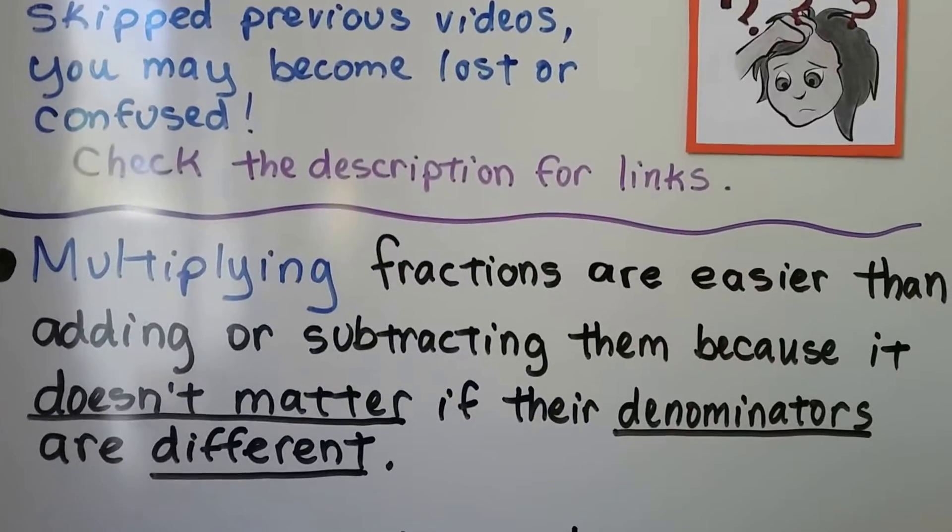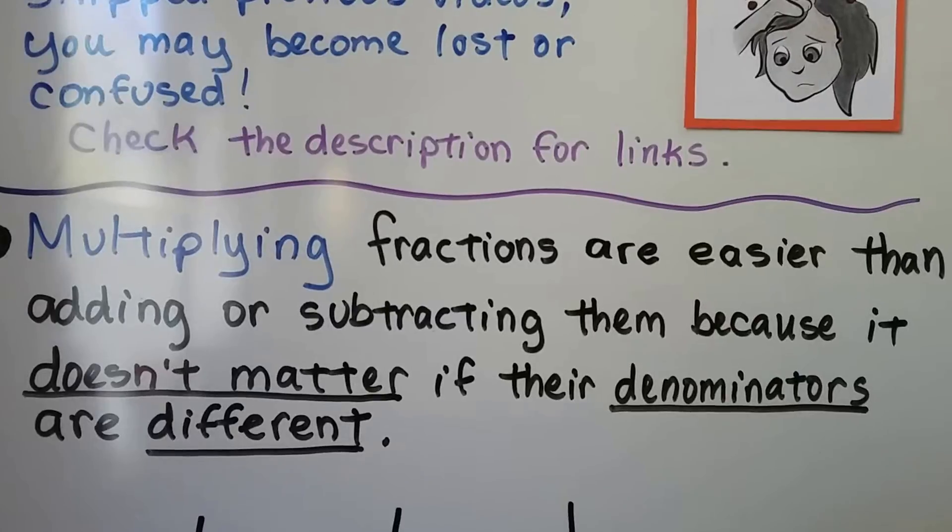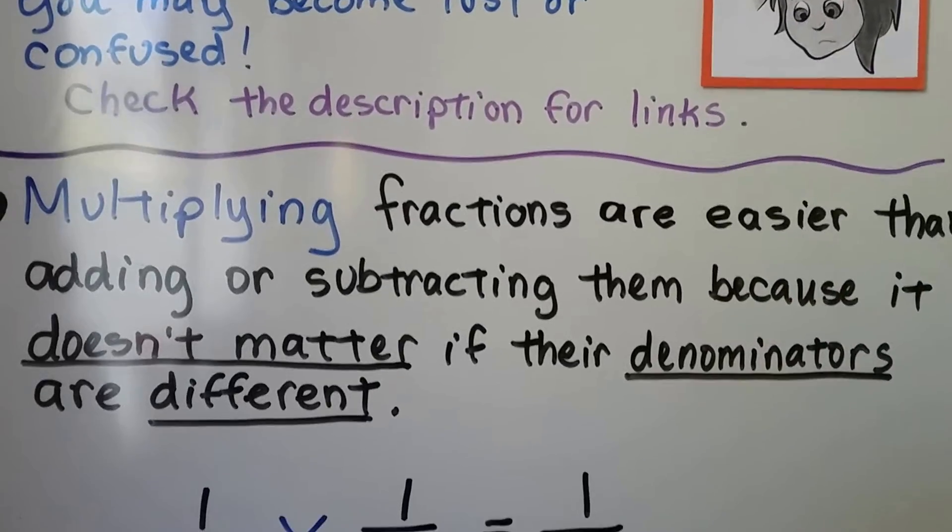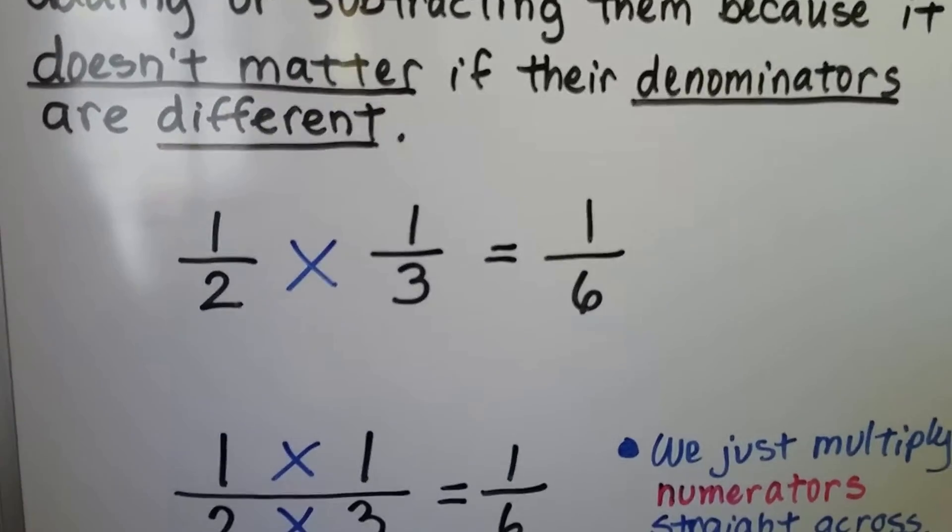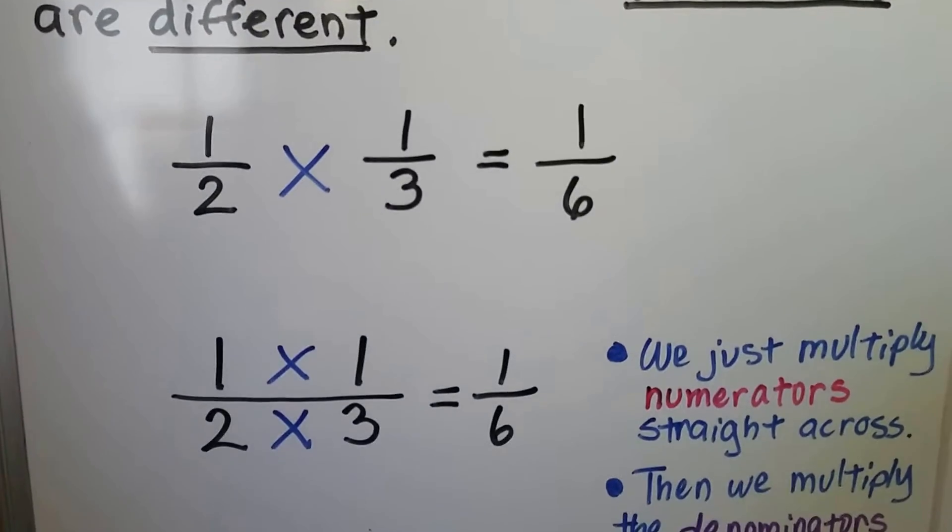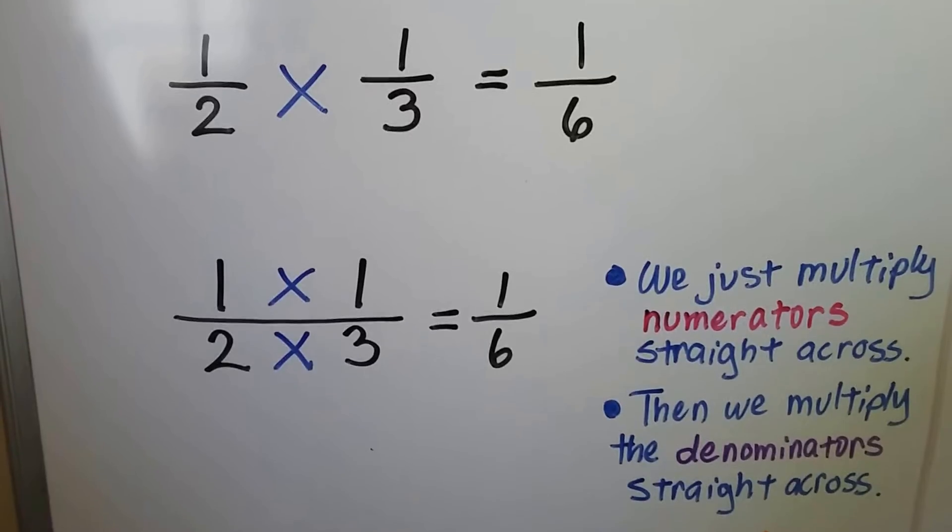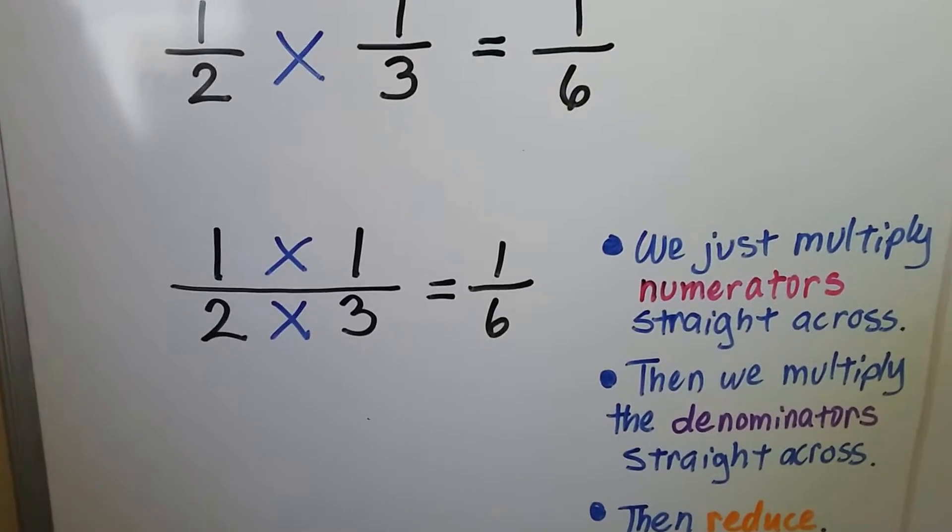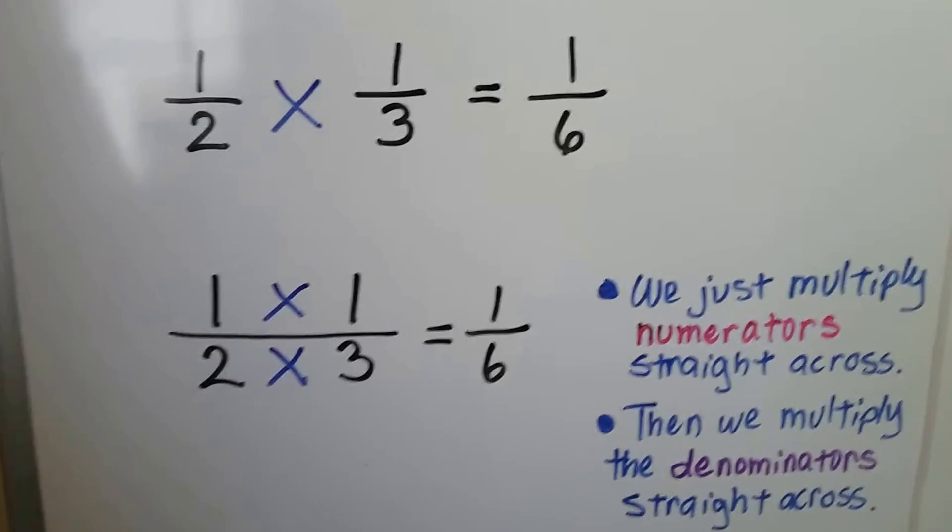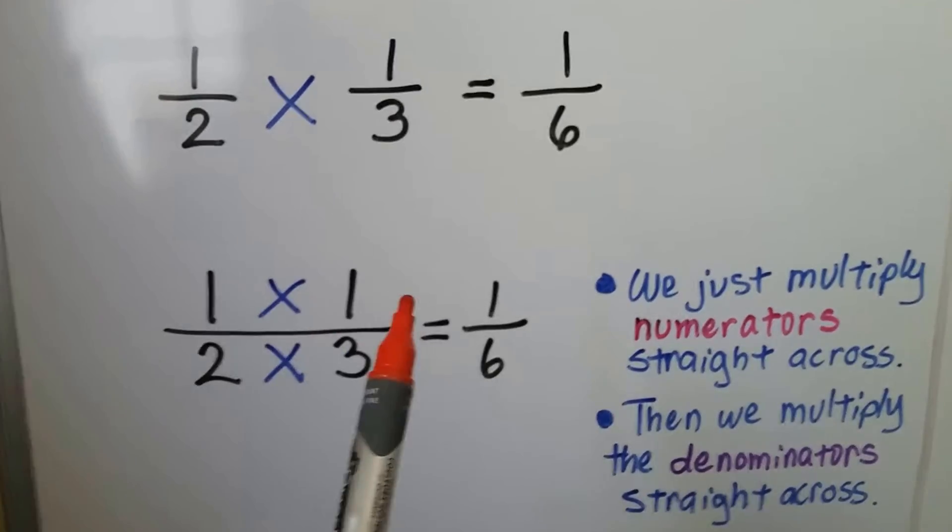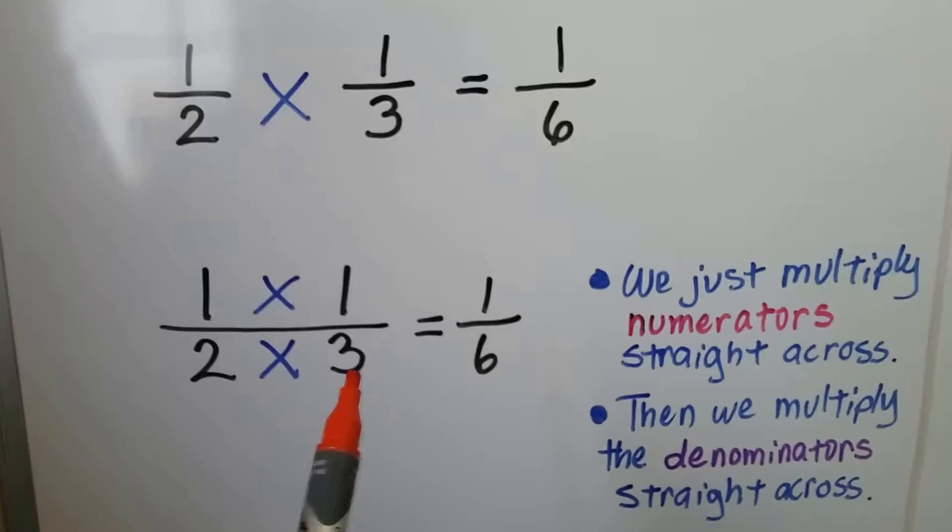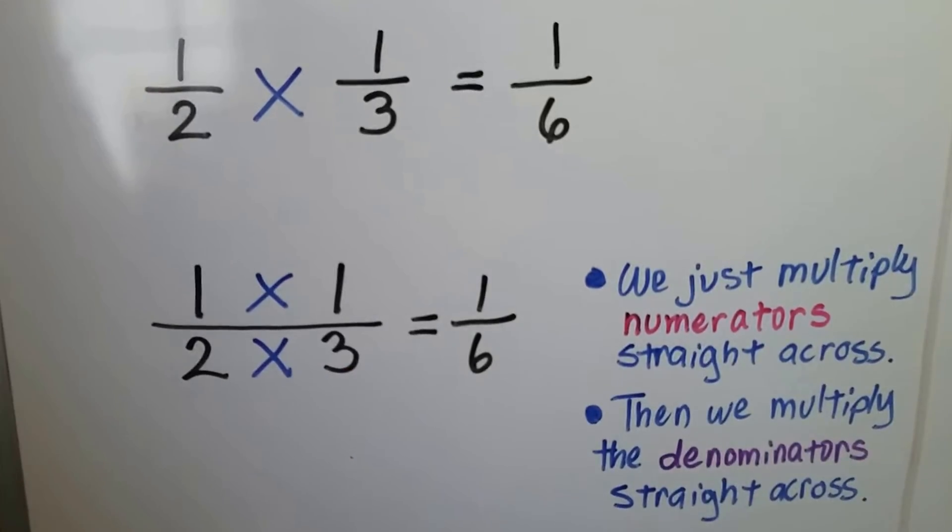Multiplying fractions are easier than adding or subtracting them because it doesn't matter if their denominators are different. We don't care. When we multiply fractions, we just multiply the numerators straight across, we multiply the denominators straight across, and then reduce if we have to. If we have 1/2 times 1/3, we multiply 1 times 1 straight across and get a 1, and the 2 times 3 straight across and get a 6. It's that easy.